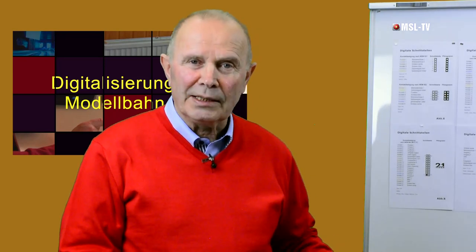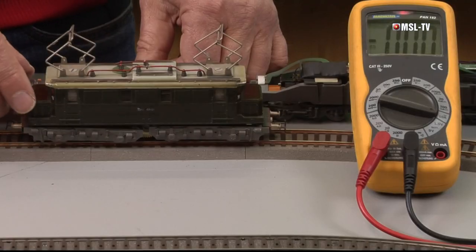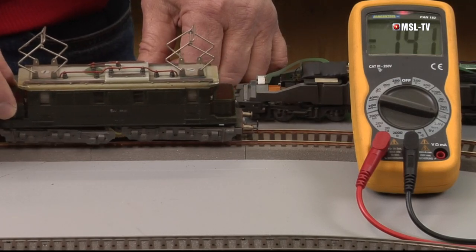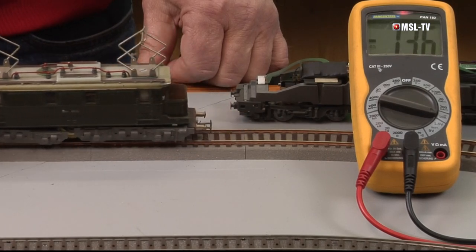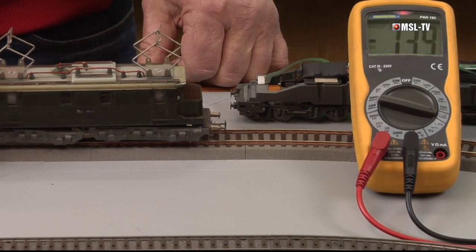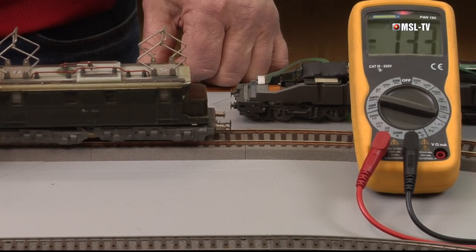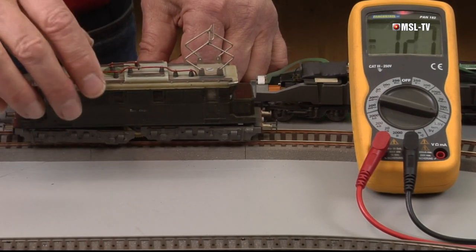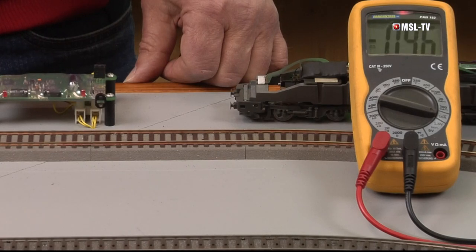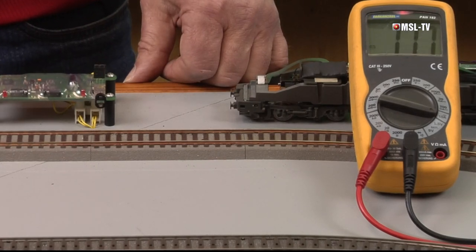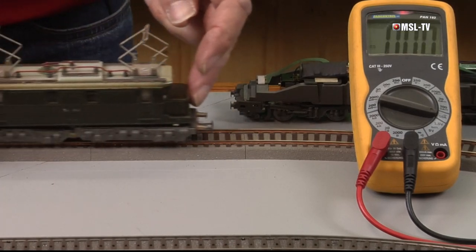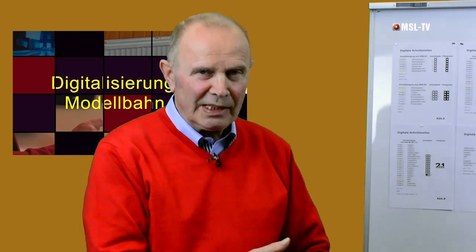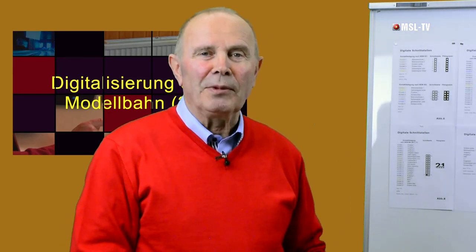Wir messen jetzt mit einem Amperemeter, eingeschaltet zwischen einem analogen Trafo und dem Schienenkreis. Wir drehen den Regler auf und messen 1,4 Ampere – die Lok fährt noch nicht mal an. Wenn wir sie anfahren lassen, hören wir auch das typische Geräusch dieser musealen Stücke. Von Fahrkultur war damals noch keine Rede. Also 1,4 Ampere.